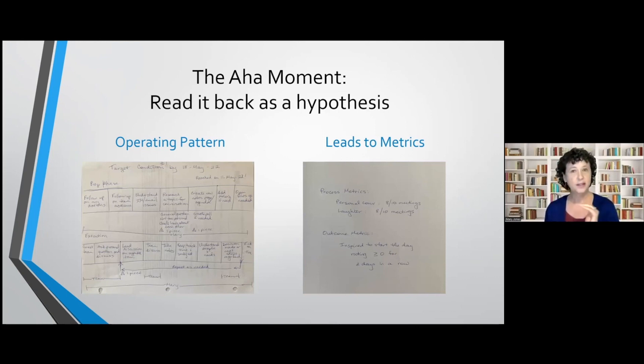So then she said the next key step was, now let's read it through as a hypothesis. And I literally spoke out loud and walked through and said, if I follow this operating pattern and do step one, two, three, four on my meetings, I propose that I will see these process metrics. And if those work, then my outcome metric, I propose will be, I will get this rating for two days in a row.